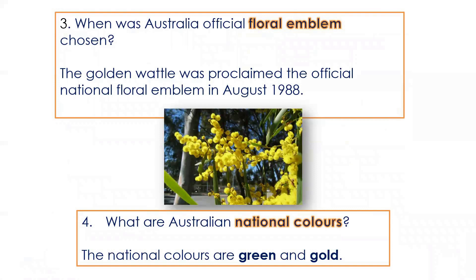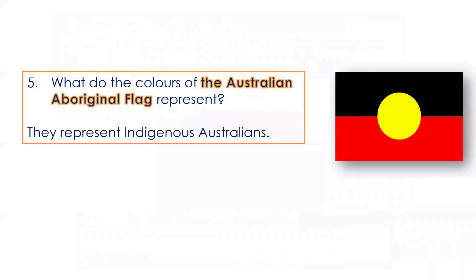Question three: when was Australia's official floral emblem chosen? The golden wattle was proclaimed the official national floral emblem in August 1988. Four: what are Australian national colours? The national colours are green and gold. Five: what do the colours of the Australian Aboriginal flag represent? They represent Indigenous Australians.